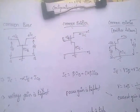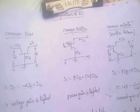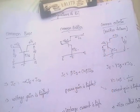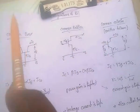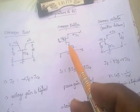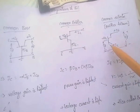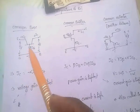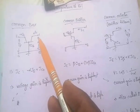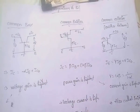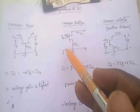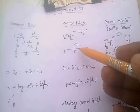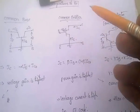Coming to the configurations of BJT, there are three: common base, common emitter, and common collector. In common base, base is grounded; input is given to the emitter-base junction and output is taken at the collector terminal. In common emitter, emitter is grounded. In common collector, collector is grounded and input is given to the base-collector junction.